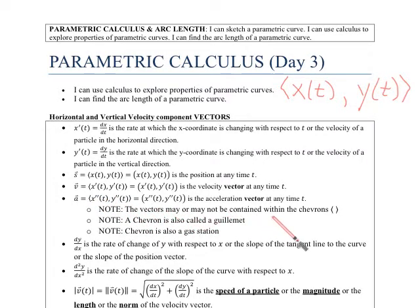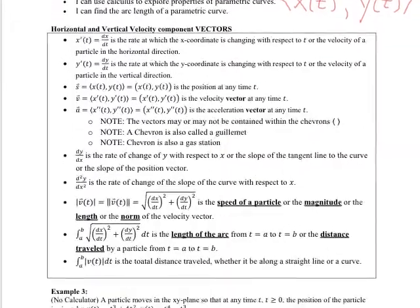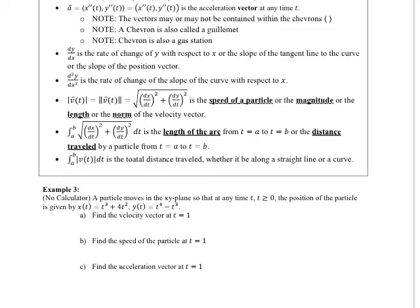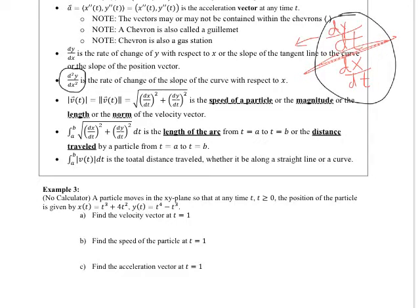These little arrows that exist at the end, those are called chevrons, and oftentimes we'll list a parametric equation as a vector held inside of these chevrons. The vectors don't have to be contained in chevrons. I like to use the chevrons because it's helping me remember that we are dealing with vectors. Another name for these angles here, other than chevron, is a guillemet, and chevron is also a gas station. Moving down the page, we have other notes here that we've already learned about, the dy/dx, and we find dy/dx by calculating dy/dt divided by dx/dt.